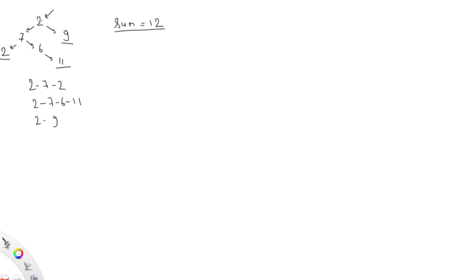We need to add all the values from a particular root-to-leaf path. In this case if we add all values from root to leaf on one path it matches 11, another matches 26. Now if our given value is 12, this path is less than the given value and this path is also less than the given value.